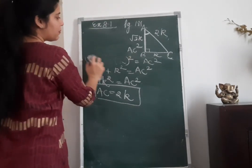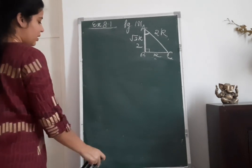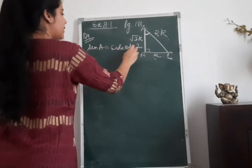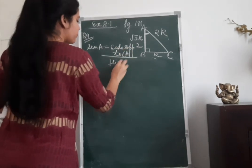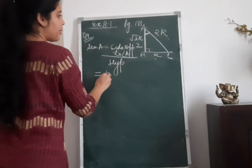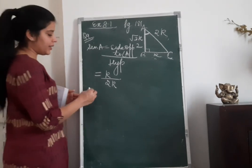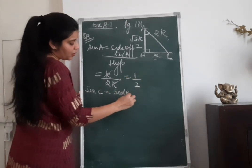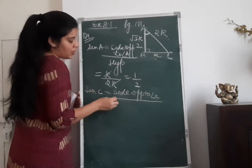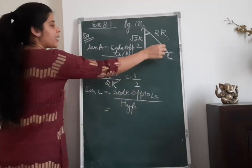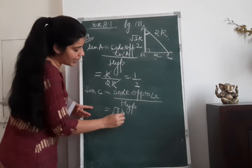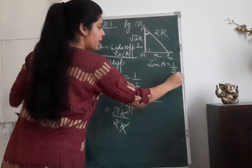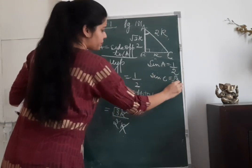Now I can find sin A. Sin A equals side opposite to angle A upon hypotenuse, which is K upon 2K. K and K cancel, giving sin A equals half. Sin C equals side opposite to angle C upon hypotenuse. The side opposite to angle C is root 3K, so root 3K upon 2K. K cancels, giving sin C equals root 3 by 2.